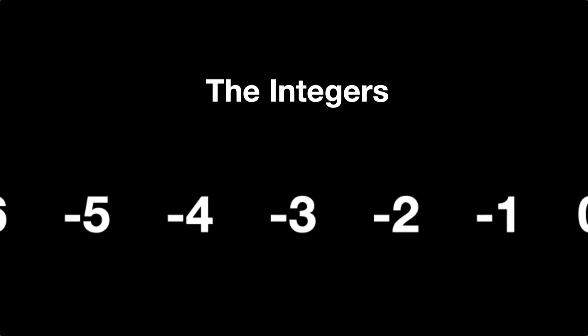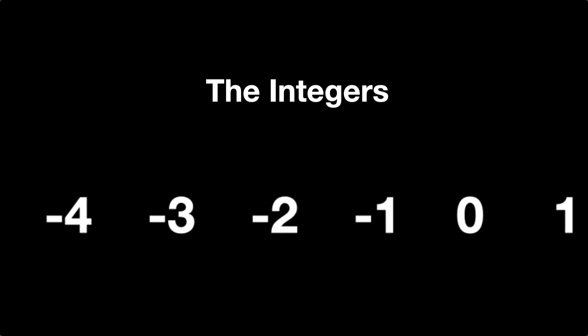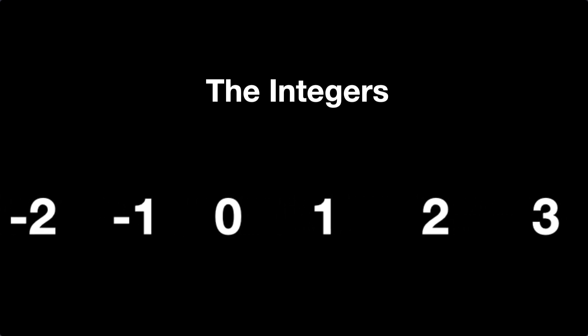The same with zero. So mathematicians made a bigger set of numbers called the integers: negative numbers and zero, as well as the counting numbers.